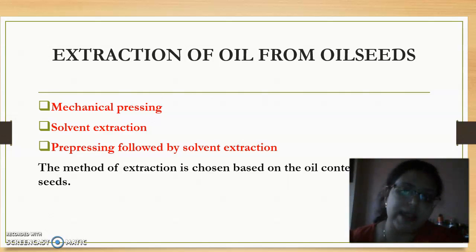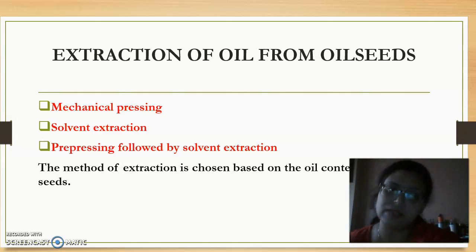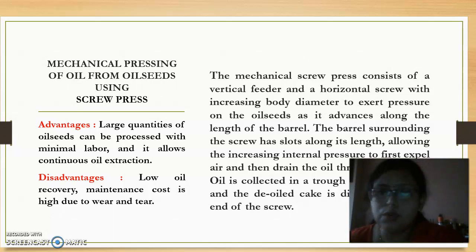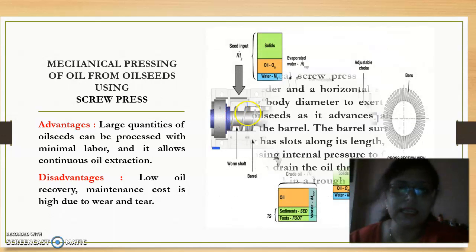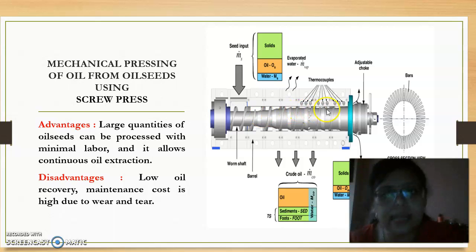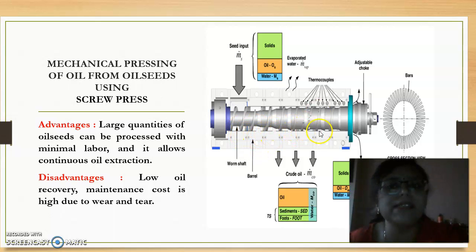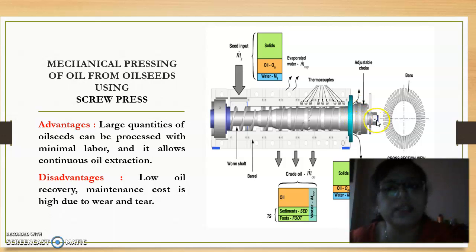Now coming to the extraction of oil. After these pre-treatments, our oil seeds are ready for extraction. Three types of extraction methods are traditionally followed. The first one is mechanical pressing, done with the help of a screw press. A screw press has a screw inside a barrel with increasing diameter. As the oil seed progresses through the barrel, the pressure on the oil seeds increases because the area decreases. As this happens, the oils are removed through slots provided on the barrel surface. We get the crude oil from these slots and the oil cake or de-oiled meal is ejected out from the barrel.